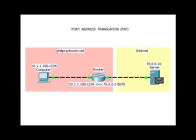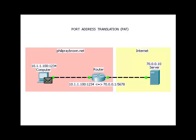The server receives the packet and sends a reply packet. Since the first packet's source address was the router's public IP address, the server sends the reply packet to the router. The router sees the source and destination address of the packet and looks in its translation table to figure out which computer to send the packet to. The computer receives the packet without the internet server knowing the computer's IP address.